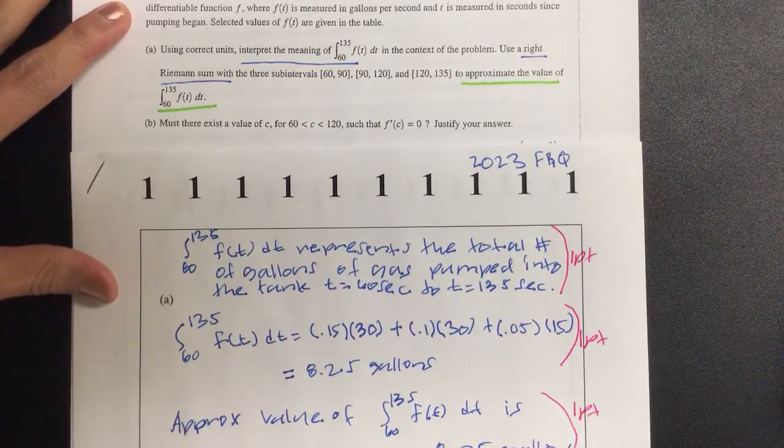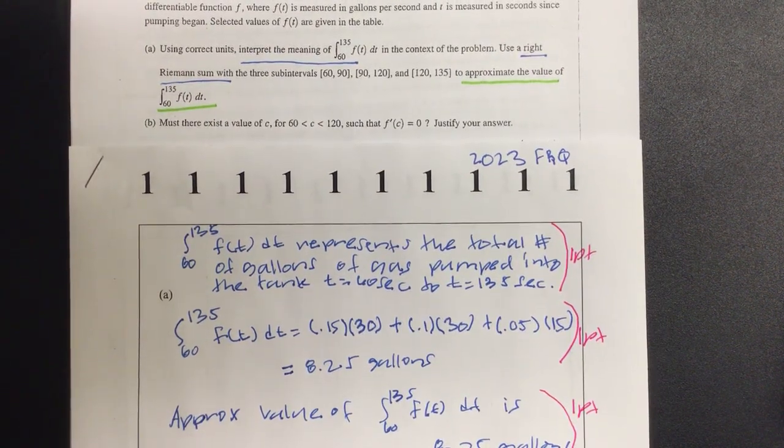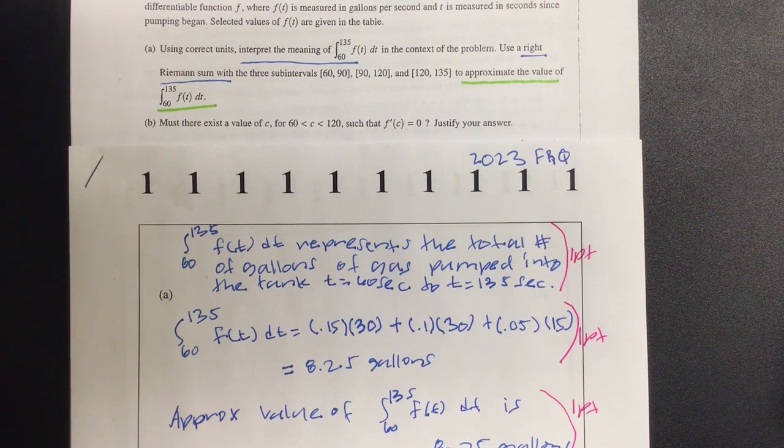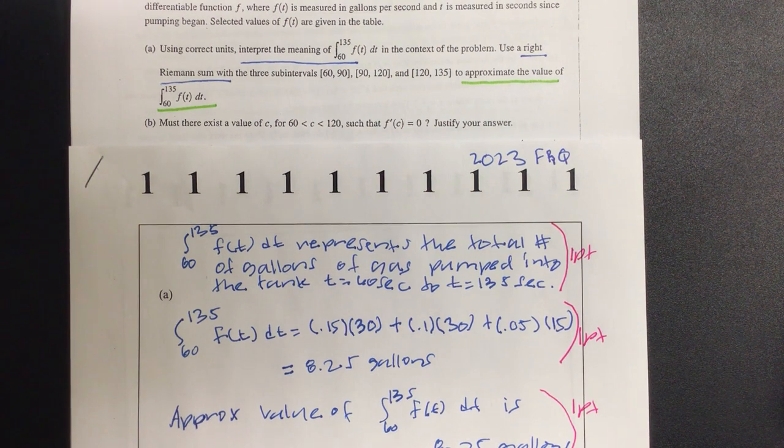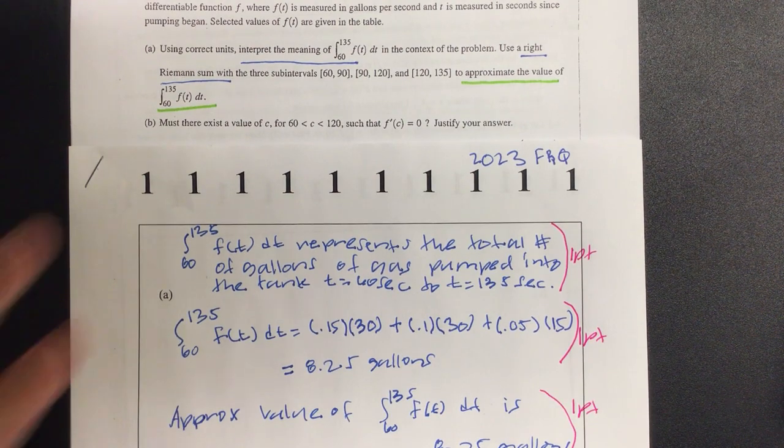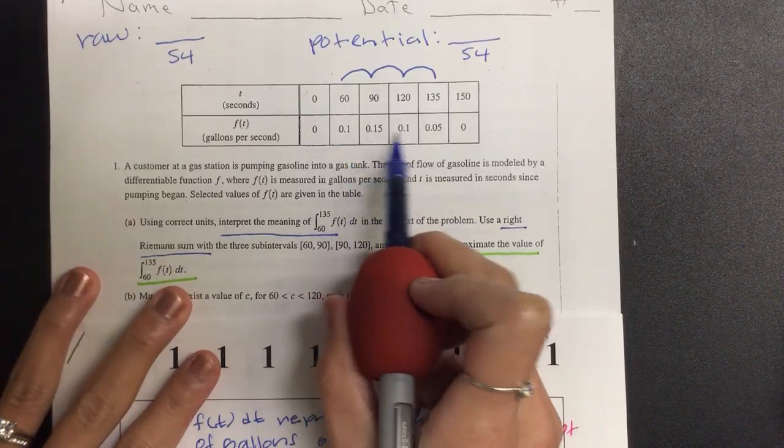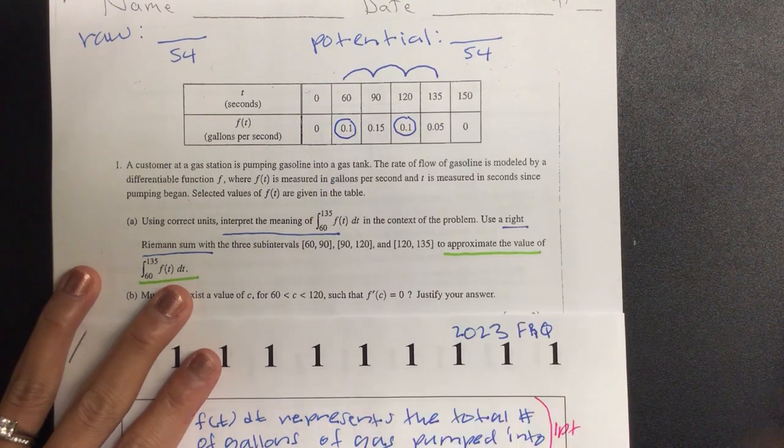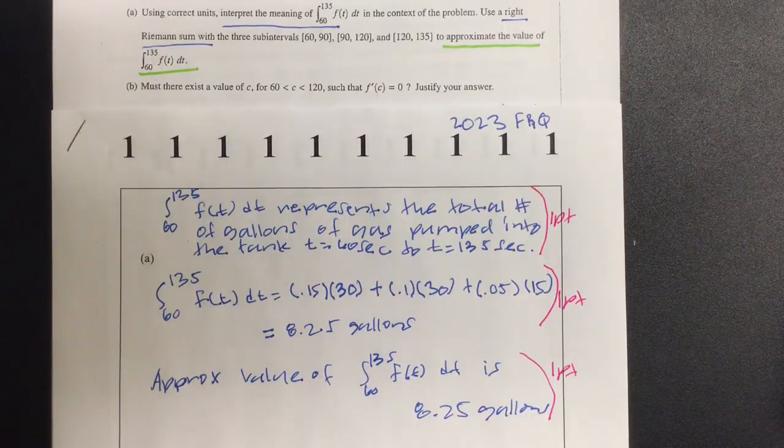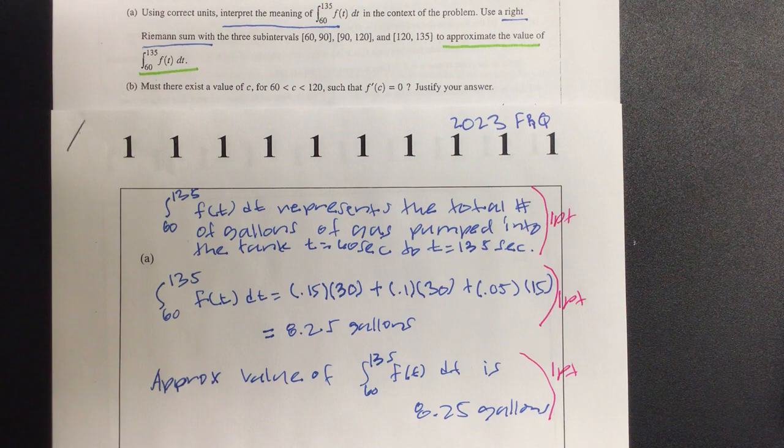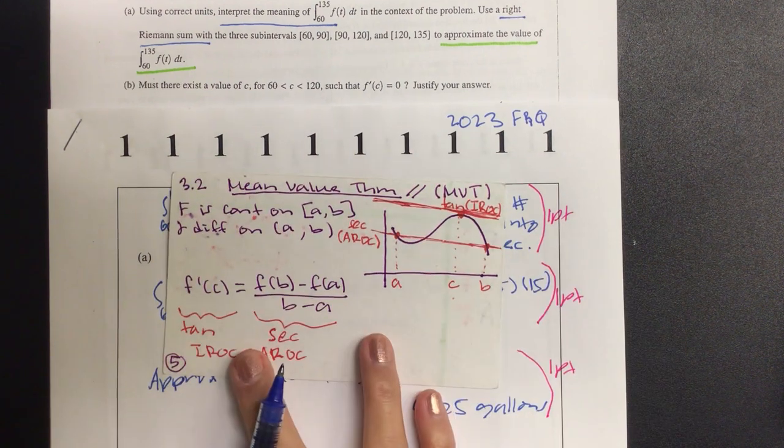Joe, go ahead and read part B. Must there exist a value of C for 60 is less than C is less than 120 such that derivative of C is equal to 0? Justify your answer. Okay, so it's saying is there any number in between? If I were to find the slope, it gives me 0. Look at this one. If I do y2 minus y1, what does that give me? 0. And that was by, do y'all remember the theorem? A rock is equal to the I rock. Mean value theorem.